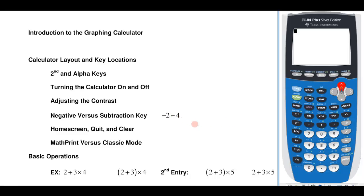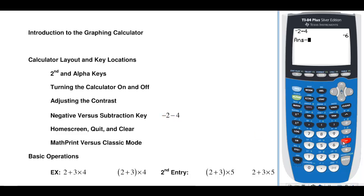I'd also draw your attention to the fact that there's a difference between a negative button and a subtraction button on the calculator. That tends to give students fits the first time they start using the graphing calculator. For example, if I wanted to calculate negative 2 minus 4, I'd have to hit the negative button and then the 2 and then subtract 4. You'll notice that the negative sign is a little bit shorter and higher on your screen than the subtraction symbol. Now if I were to just hit the subtraction button for that, notice that it wants to subtract from the previous answer — so it would take negative 6 and subtract 4, giving me negative 10.